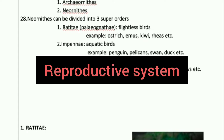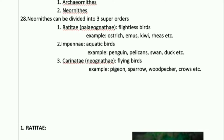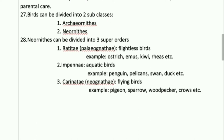Fertilization is internal, and these are oviparous animals — meaning egg-laying animals. The development is direct, meaning they don't have a larva stage. These are some of the general characteristics of Aves.